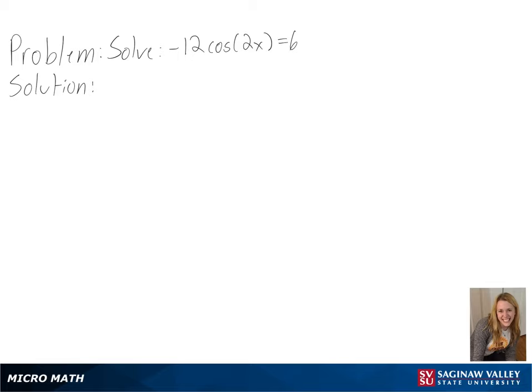Our problem is to solve negative 12 cosine of 2x equals 6.